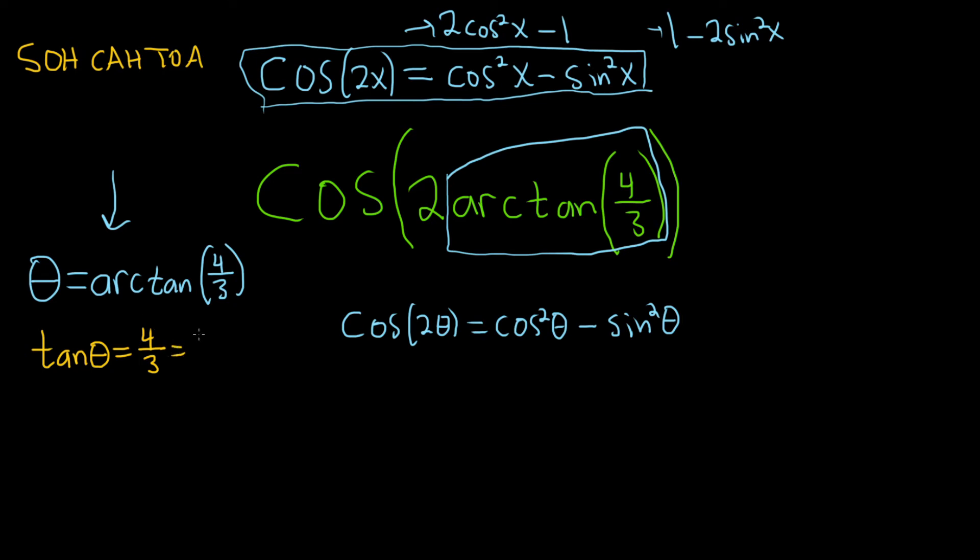So remember, tangent is opposite over adjacent. So I'm going to go ahead and draw our triangle like this. And then here's our theta. And so it's opposite, which is this one, 4. And then adjacent is this one down here, so 3.